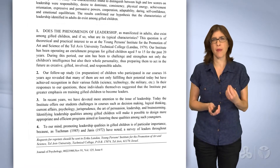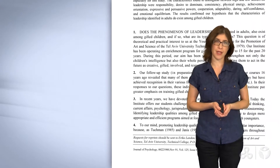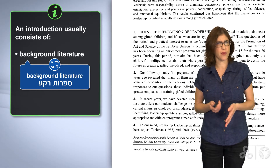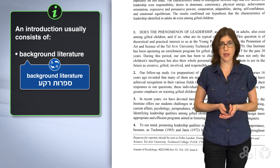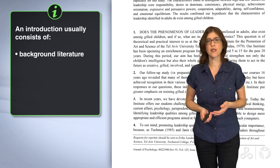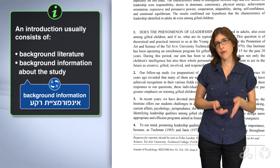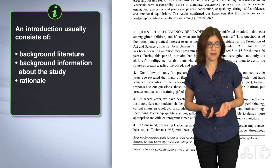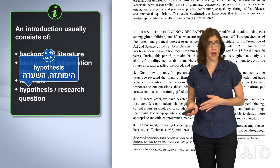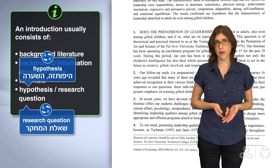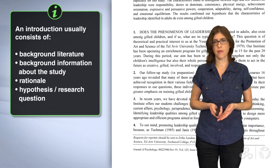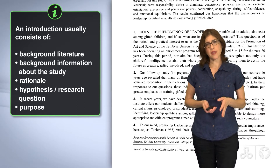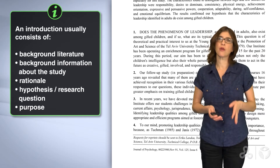An introduction usually consists of background literature — a review of previous studies on the topic. Sometimes it includes background information about the study. It has rationale, hypothesis or research question, and the purpose of the study. So in this introduction of the research text, we will look for these elements.